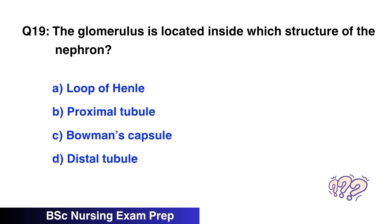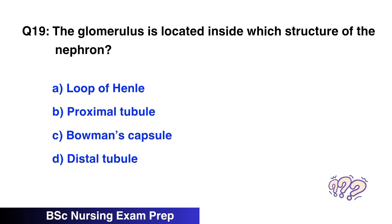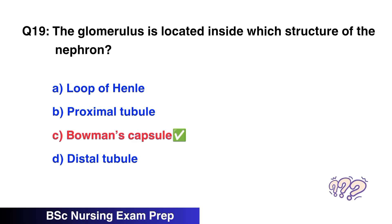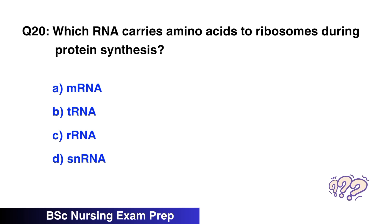Question number 19: The glomerulus is located inside which structure of the nephron? The right option is C, Bowman's capsule. Question number 20: Which RNA carries amino acids to the ribosome during protein synthesis? The right option is B, tRNA.